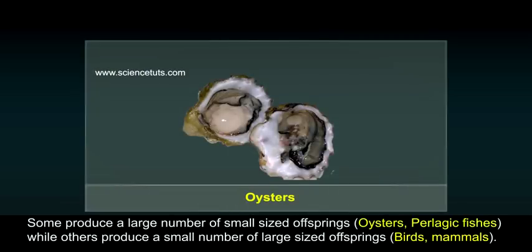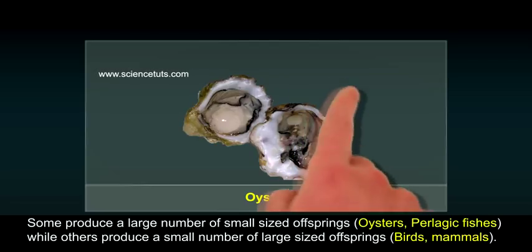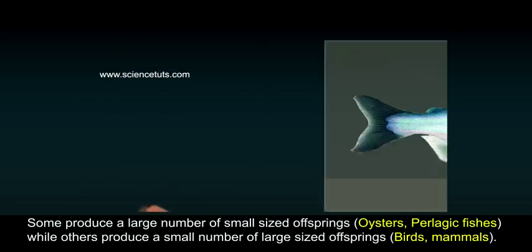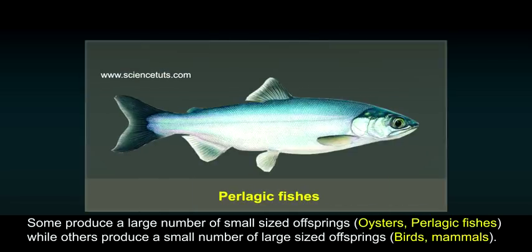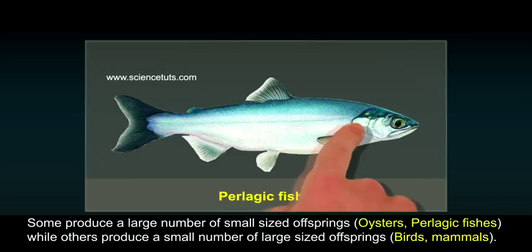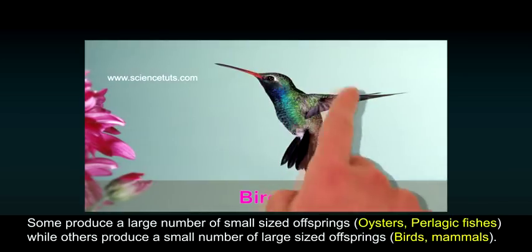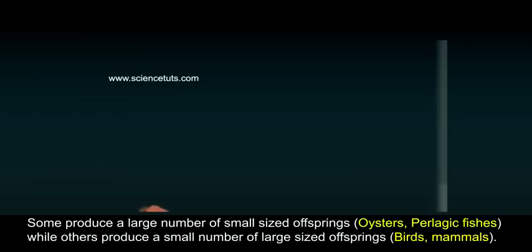Some organisms produce a large number of small-sized offspring — for example, oysters and pelagic fish — while others produce a small number of large-sized offspring — for example, birds and mammals.